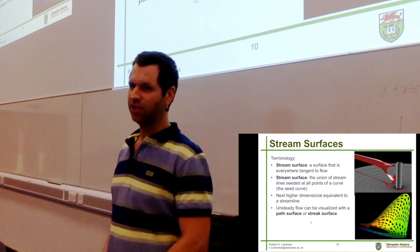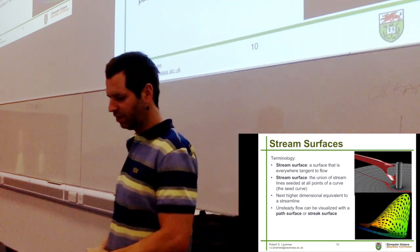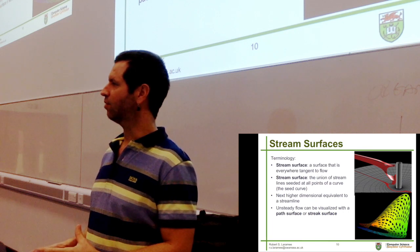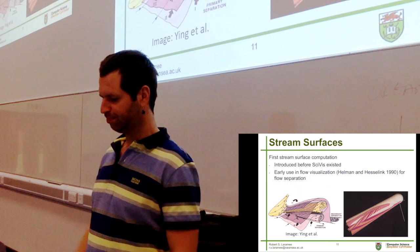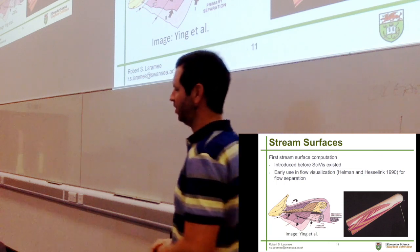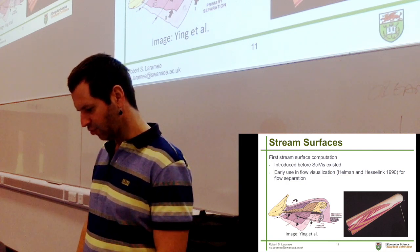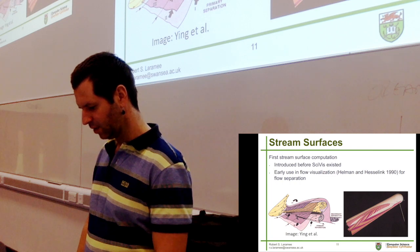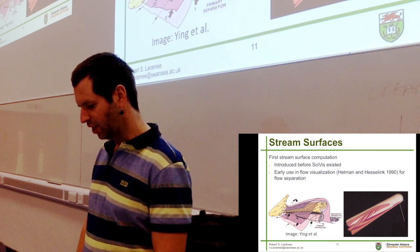We can extend this idea to unsteady flow through path surfaces and streak surfaces, but not without changes to the implementation. The first stream surfaces were hand drawn, as with most data visualization concepts. These hand-drawn stream surfaces show rotational behavior and two vortices — primary separation and secondary separation.